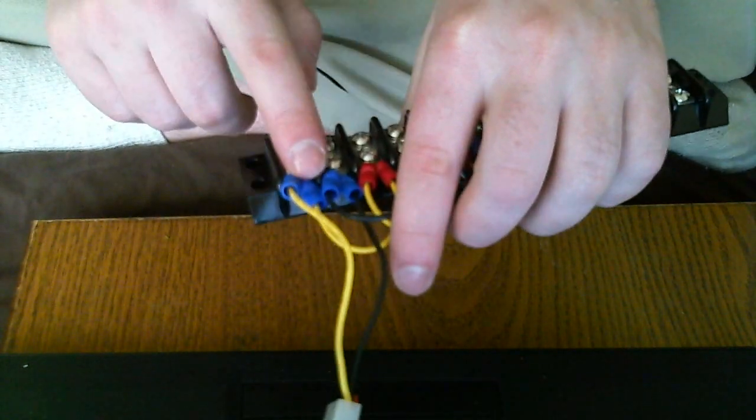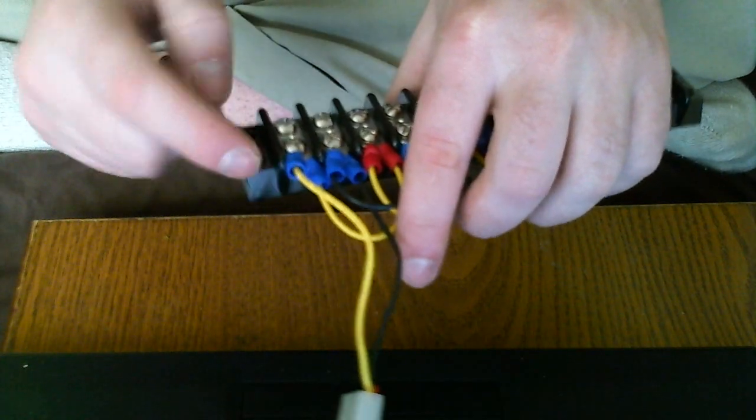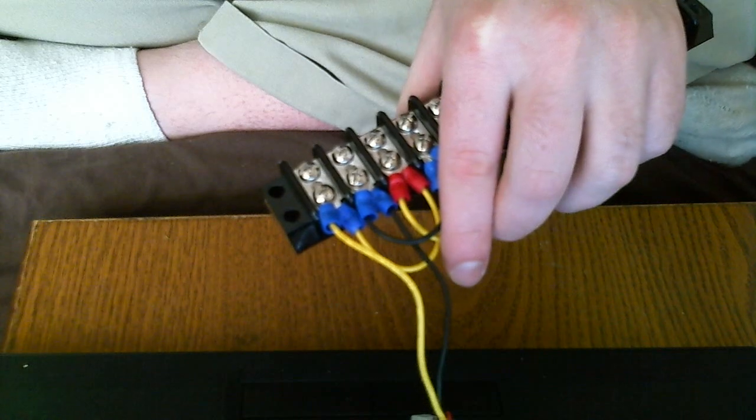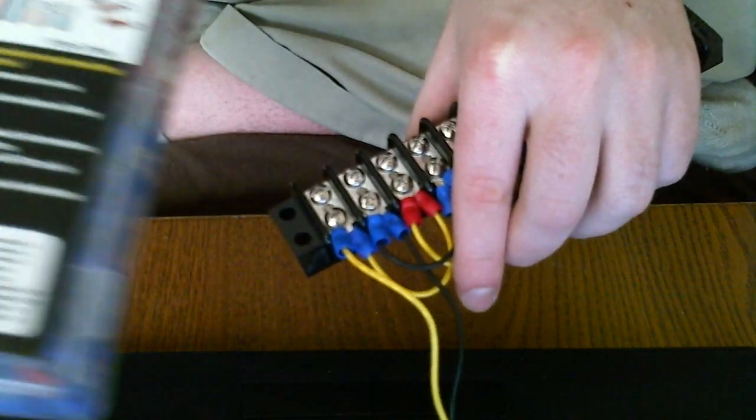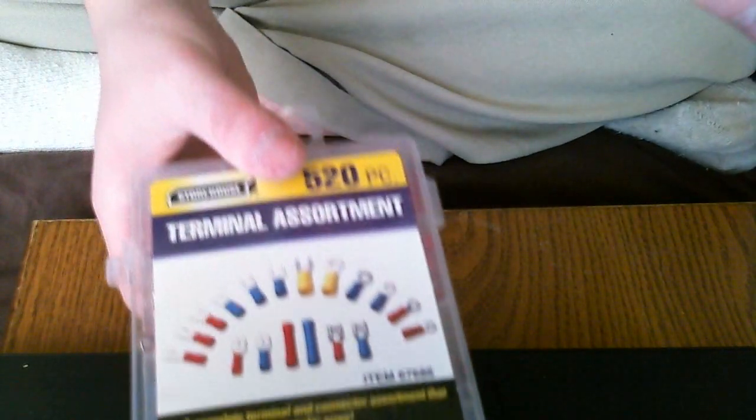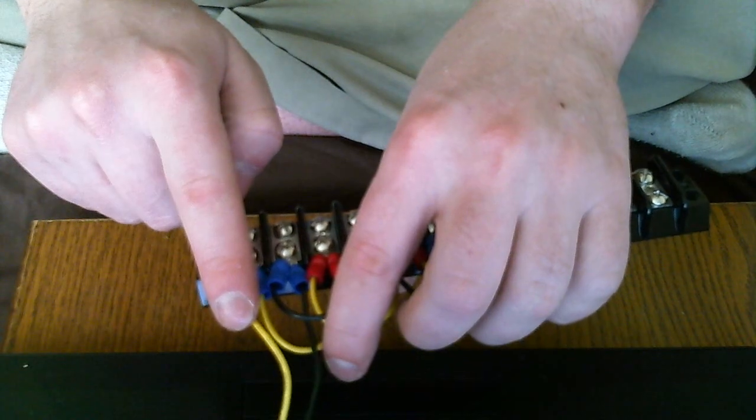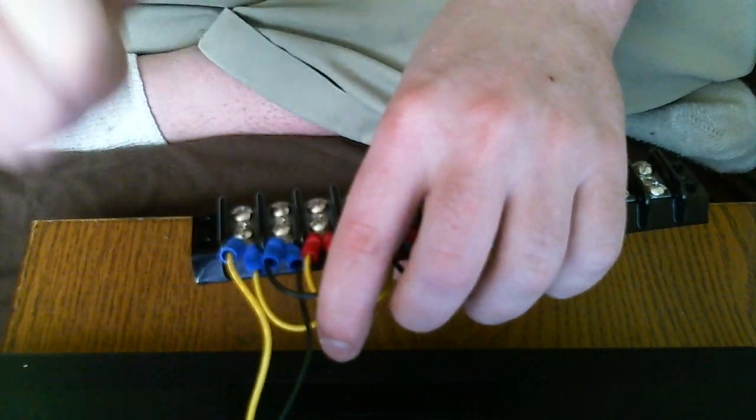From there I twisted the wire and then inserted it into the terminal block. I took a connector and here they are right here. You want 18 gauge. So this is 18 gauge yellow wire, 18 gauge black wire.